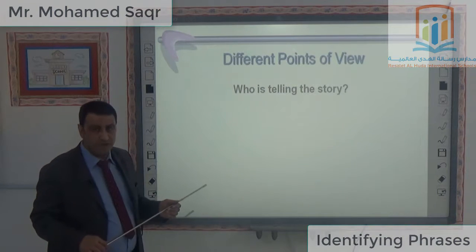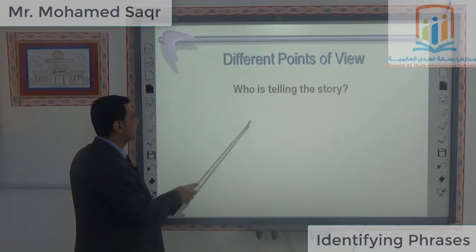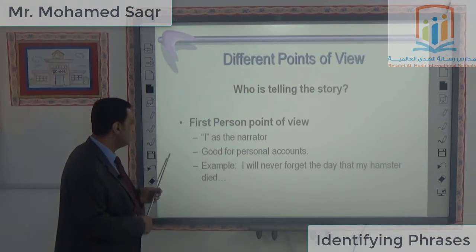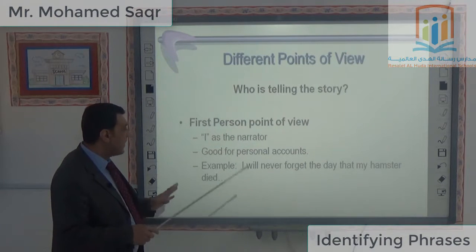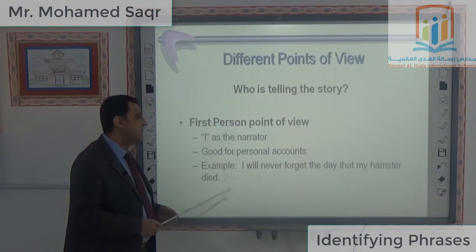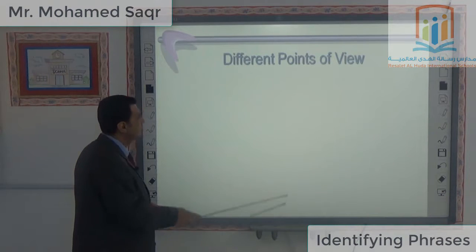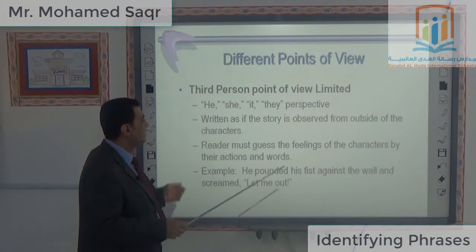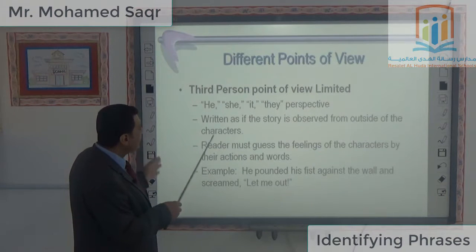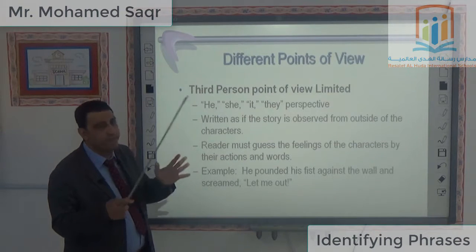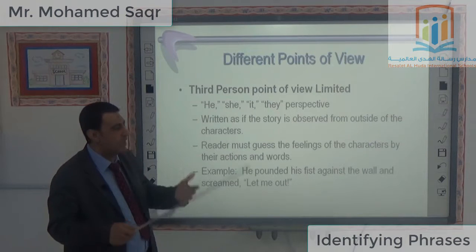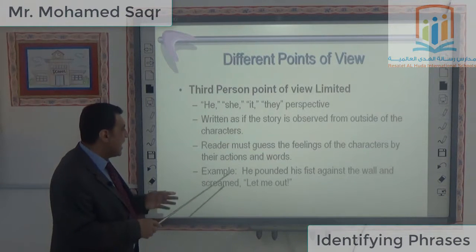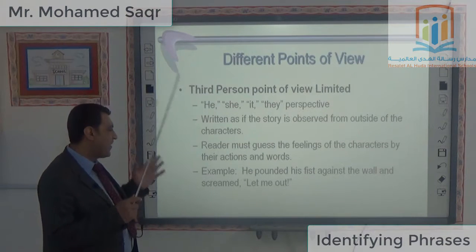Different points of view determine who is telling the story. First person point of view uses 'I' — the narrator is part of the story. It is good for personal accounts. Example: 'I'll never forget the day that my hamster died.' Third person point of view uses 'he,' 'she,' 'it,' or 'they.' The story is narrated as if observed from outside the characters. The reader must guess the feelings of characters by their actions and words. Example: 'He pounded his fist against the wall and screamed, let me out.'